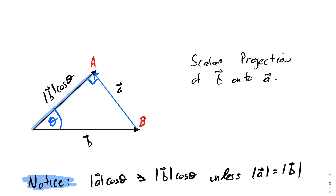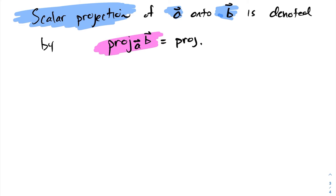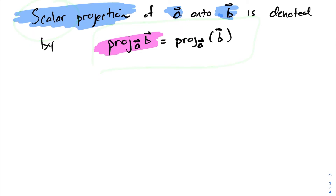Let's take a look at some notation so that we can express the scalar projection more easily. To denote the scalar projection of A onto B, we write: proj (subscript A) acting on B, where PROJ stands for projection. We should view this as using vector A as your function, acting on vector B. To get the scalar projection, we take the magnitude of that vector, placing magnitude symbols on the outside.